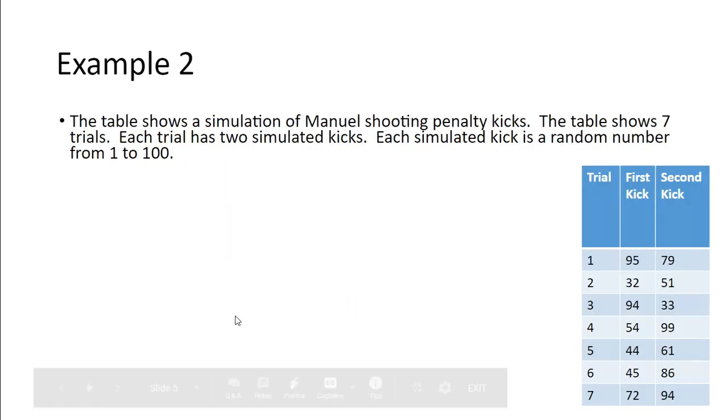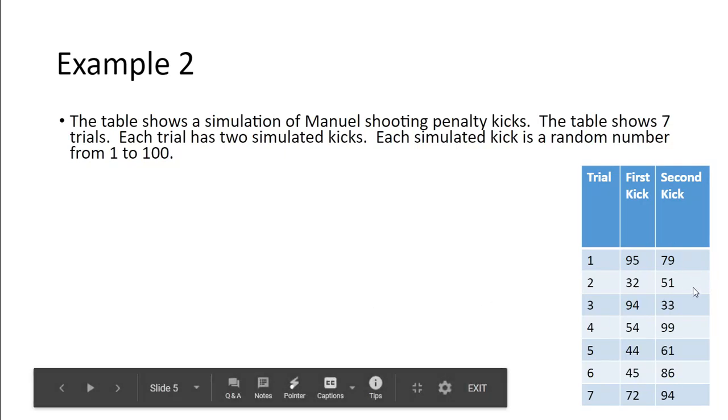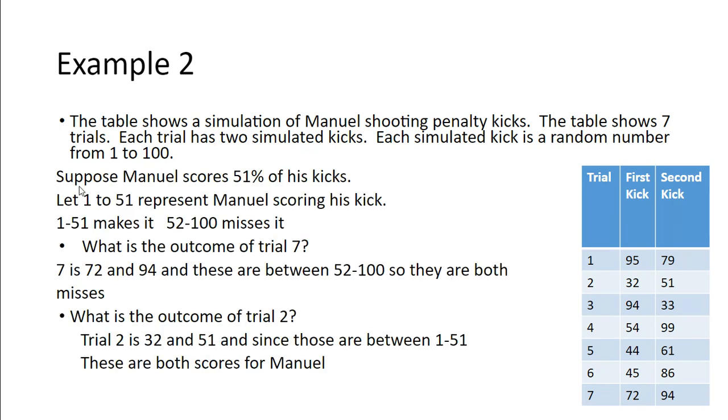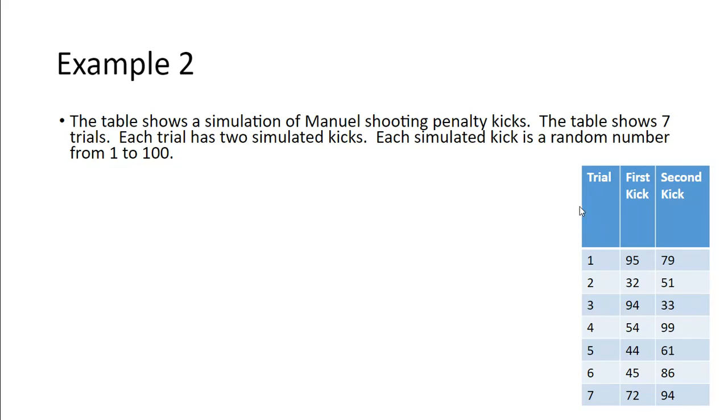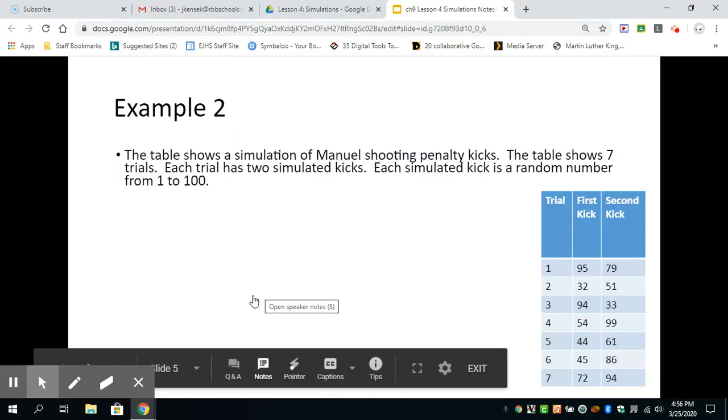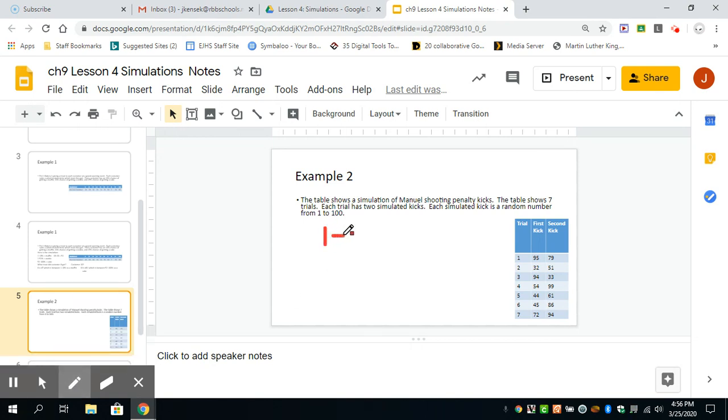So moving on to example two, it looks a lot the same way. We're given a table. I feel like this one's maybe a little bit harder to understand because it tells us here that each trial has two simulated kicks. Suppose Manuel scores 51% of his kicks. So just keep that in mind that anything over 51% he's making. So if you think about these, that means if I put it back in, so anything from 1 to 51 is a score, we'll show that with a plus. And then that would mean from 52 to 100 would be a miss. I'll show it with a down arrow. You could show it a couple different ways.